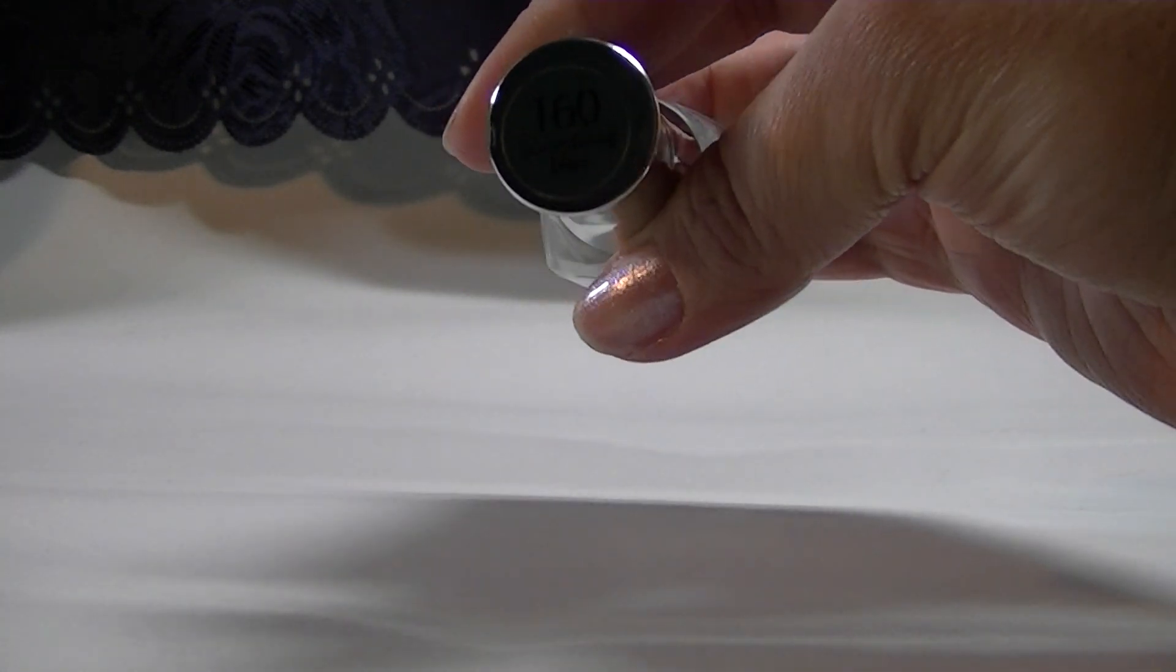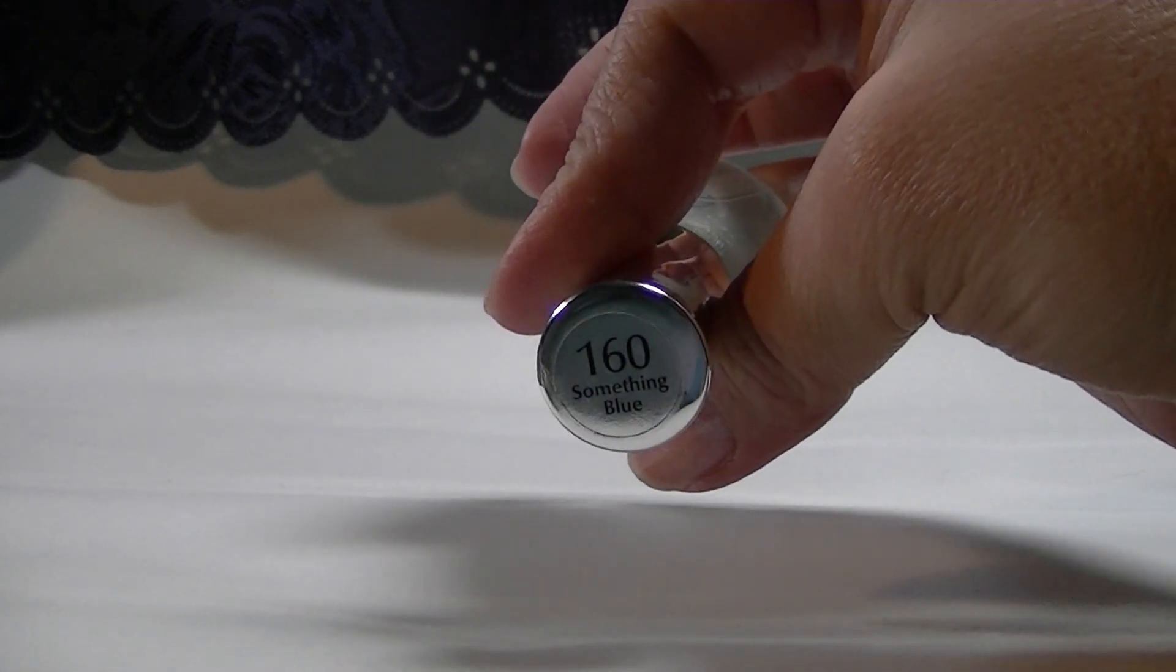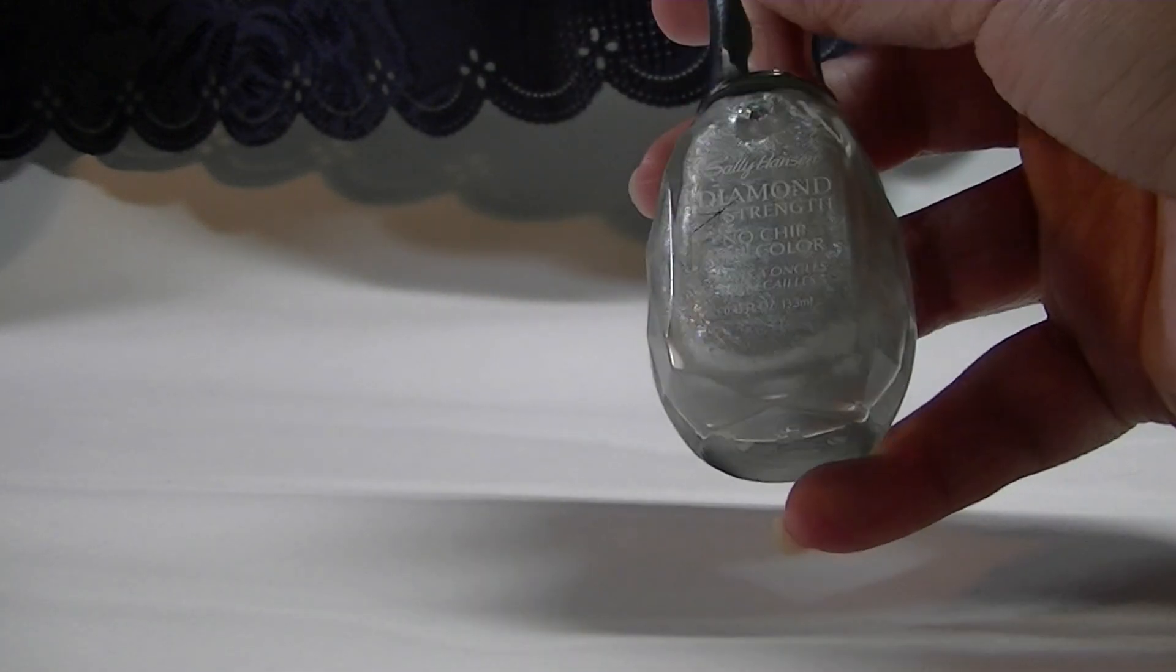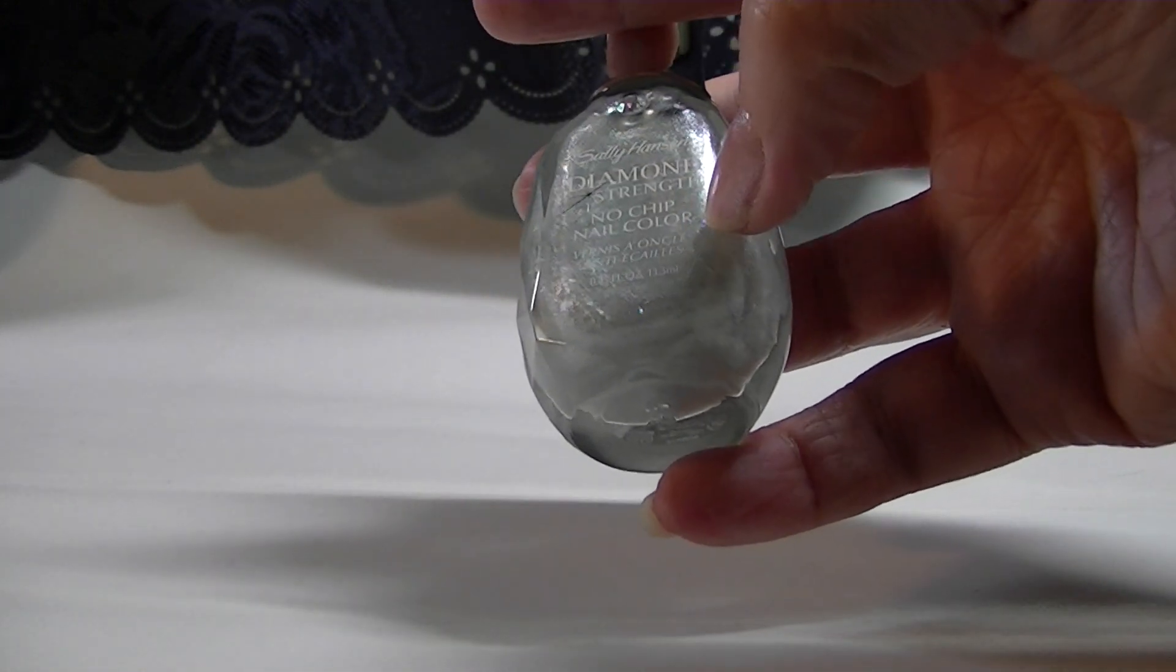This is called one number 160, something blue. This is the Sally Hansen Diamond Strength No Chip Nail Color.